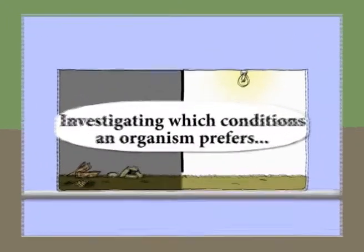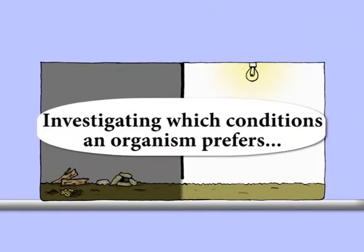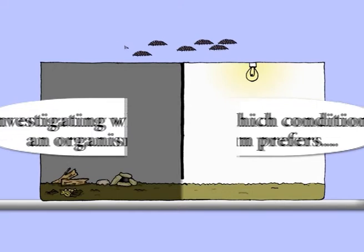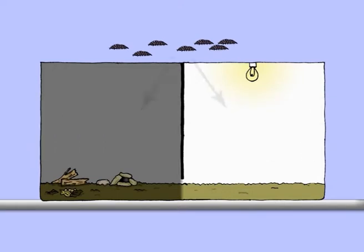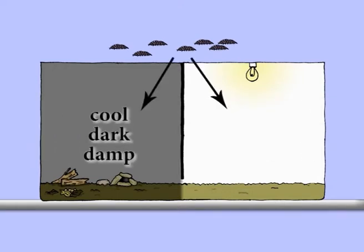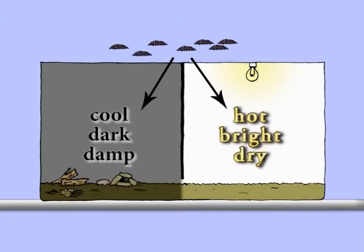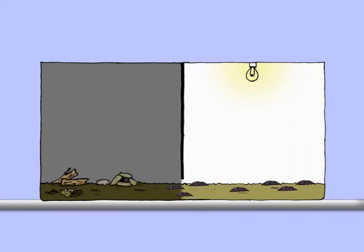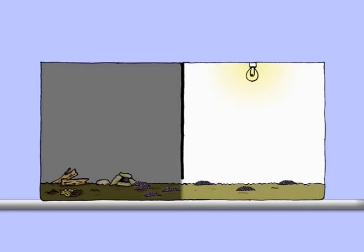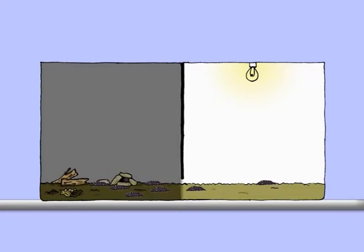You can investigate what kind of conditions an organism prefers. Let's give a number of wood lice a choice between cool, dark, damp conditions and hot, bright, dry conditions. Most of the wood lice head straight for the cool, dark, damp side of the box because they can find leaf litter to feed on there, whereas they will dry out under the hot, bright light on the other side.